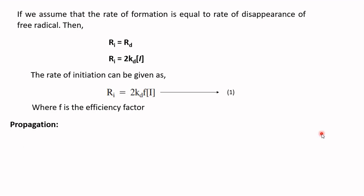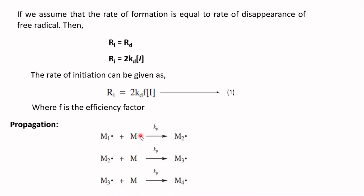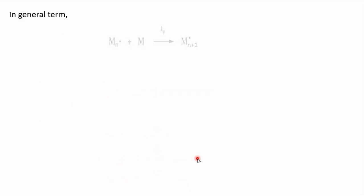The propagation step consists of the growth of chain radical M1• by successive addition of a large number of monomer molecules. The chain radical M1• adds to a monomer molecule to generate a new chain radical M2•. This M2• adds to one more monomer unit to give M3•. Each addition creates a new radical that has the same identity as the previous one, except it is larger by one monomer unit.